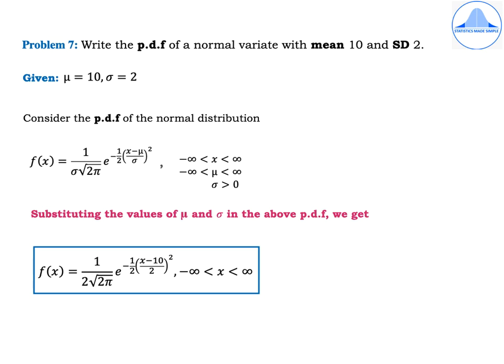Problem 7: Write the PDF of a normal variate with mean 10 and standard deviation 2. Given: mu is equal to 10 and sigma is equal to 2. Now let's consider the general format of the PDF of the normal distribution.